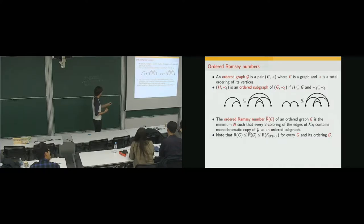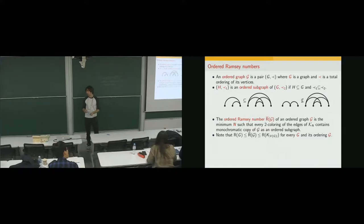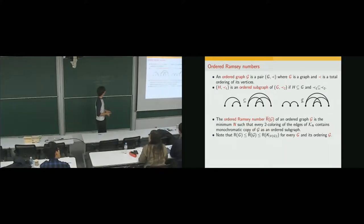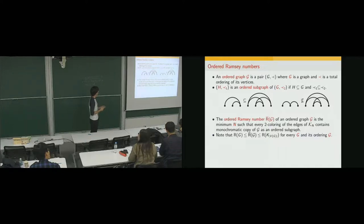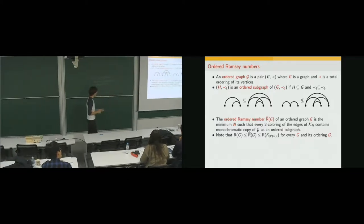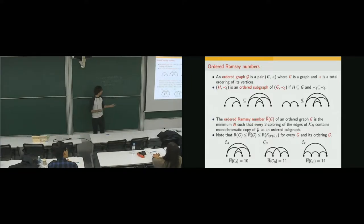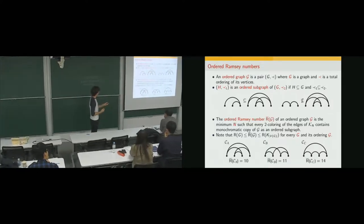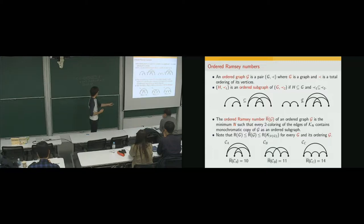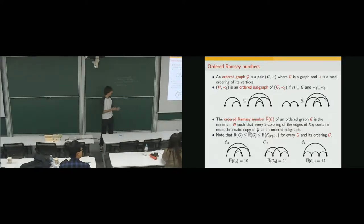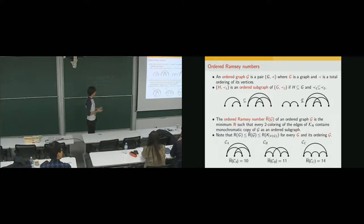In particular, these ordered Ramsey numbers are finite and grow at most exponentially. We have also computed ordered Ramsey numbers of all possible orderings of the 4-cycle — there are three pairwise non-isomorphic orderings — and their ordered Ramsey numbers are 10, 11, and 14 respectively. You can see that for different orderings of the same graph, we get different ordered Ramsey numbers. Recall that for the unordered 4-cycle the Ramsey number was 6; here all ordered versions are strictly larger, so fixing the vertex ordering can increase Ramsey numbers.